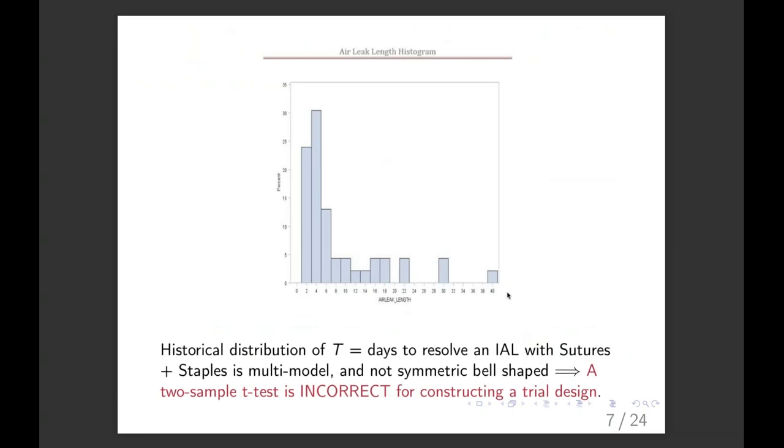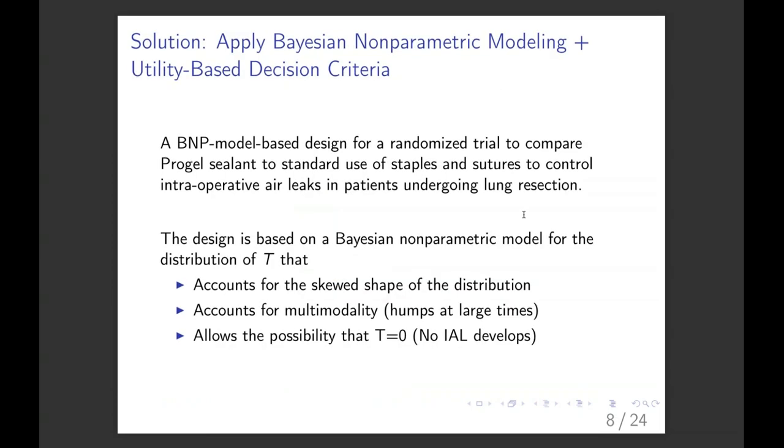So I then had my stat analyst draw a histogram of the data from people that had gone through thoracotomies to see how long it actually took to resolve the air leaks. And you see the distribution is anything but normal. It's multimodal, it's asymmetric. And so obviously, since the T distribution requires a normality assumption, that's wrong. So I decided to talk to my colleagues and cook up a Bayesian nonparametric model based design.